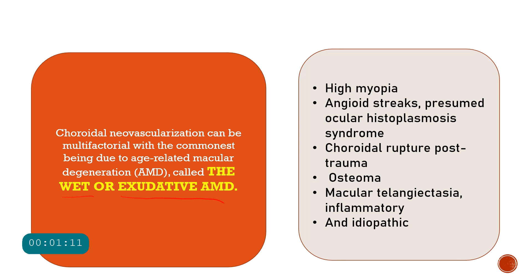Apart from age-related macular degeneration there are a lot of causes which can cause development of a choroidal neovascularization. Example number one is high myopia. In high myopia or pathological myopia there is usually a chorioretinal atrophy in the posterior segment, and because of the chorioretinal atrophy there will be changes in the retinal pigment epithelium and the Bruch's membrane. Whenever there is a rip in the RPE or a break in the Bruch's membrane, the underlying choroidal vessels grow inside the retina through this break — that is the choroidal neovascular membrane.